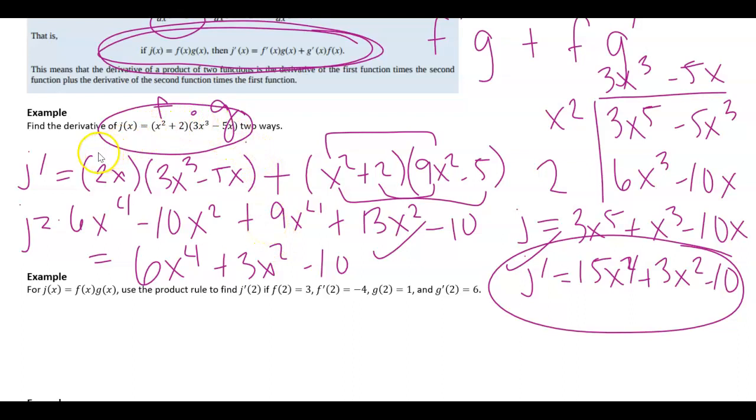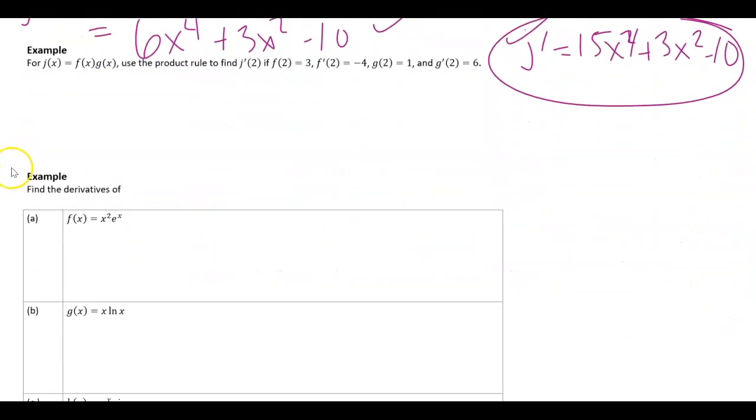All right, let's look at this example. This is more just for notation's sake. j of x is f times g. Use the product rule to find j prime of 2, and then it gives us just some outputs here. Let's write just j prime of x first. That's going to be f prime times g plus f times g prime.